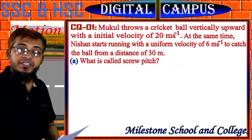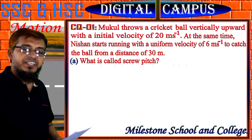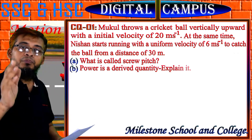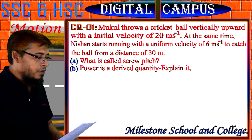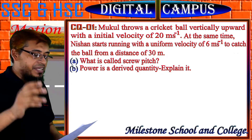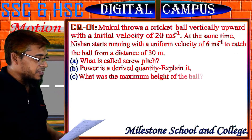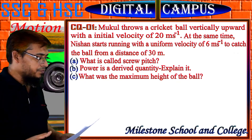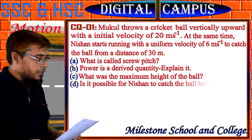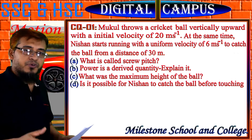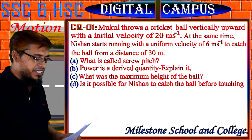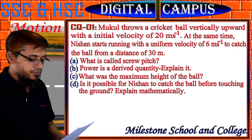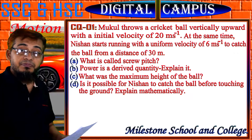Knowledge based question A: What is called screw pitch? Comprehension based question B: Power is a derived quantity — explain it. C: What was the maximum height of the ball? D: Is it possible for Nishan to catch the ball before it touches the ground? Explain mathematically.